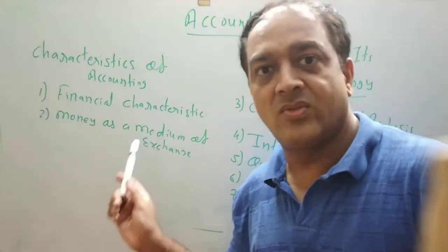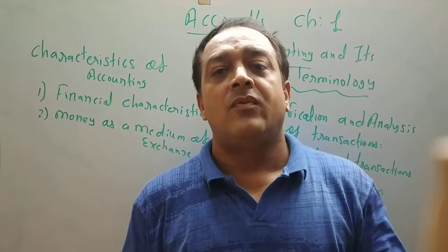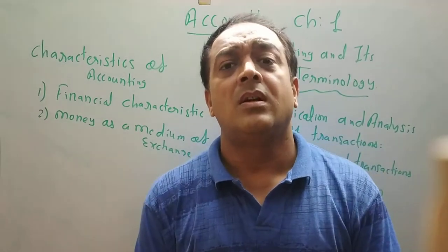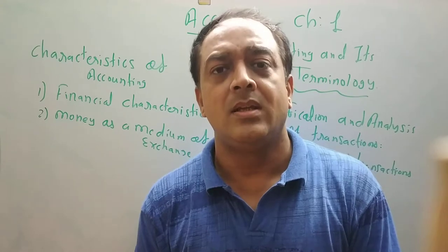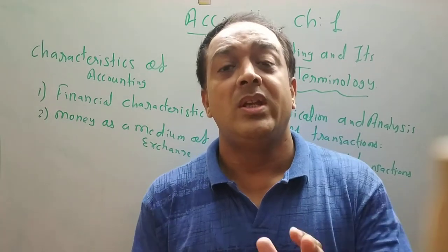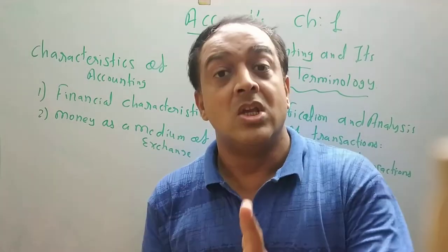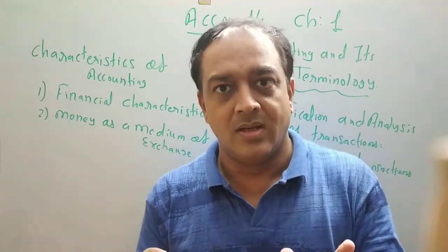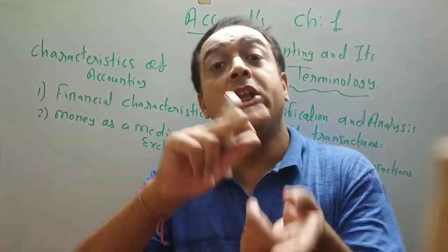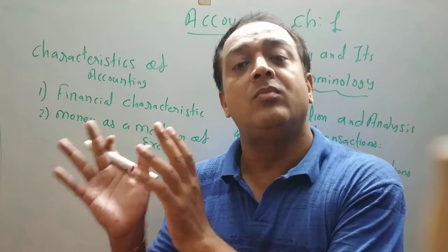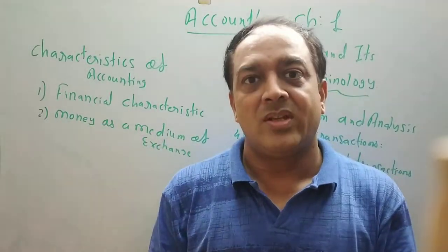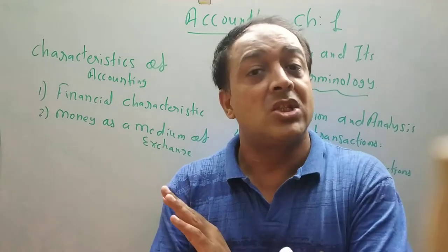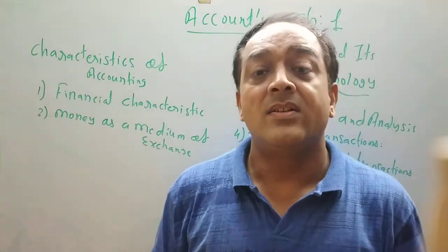First point: financial characteristics. It means that in business, each and every transaction is recorded. For example, purchase rice of 500 kg at Rs. 10 per kg. So 500 into 10, that is 5,000. So 5,000 is recorded in books of account, not 500 kg. In books of account, only money is recorded, not kg or litre.